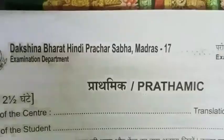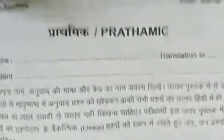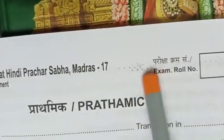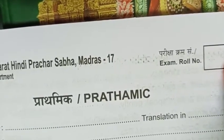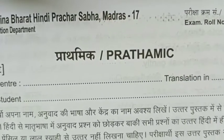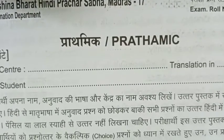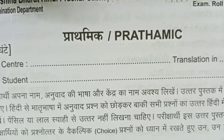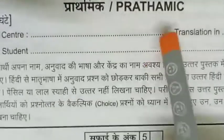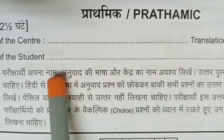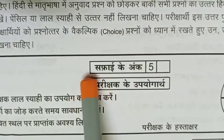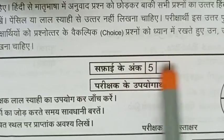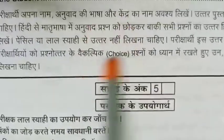In the exam, you have to write your roll number. They will give you a booklet, and you have to finish all the answers in that booklet only, then submit it to the teacher. This is the Pradhamika form — write your centre name, your name, and everything here. For handwriting, you will get 5 marks.